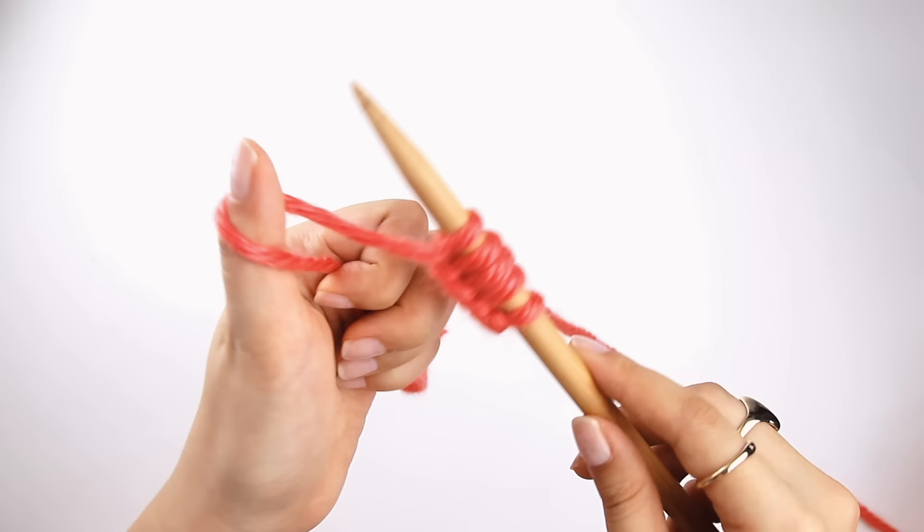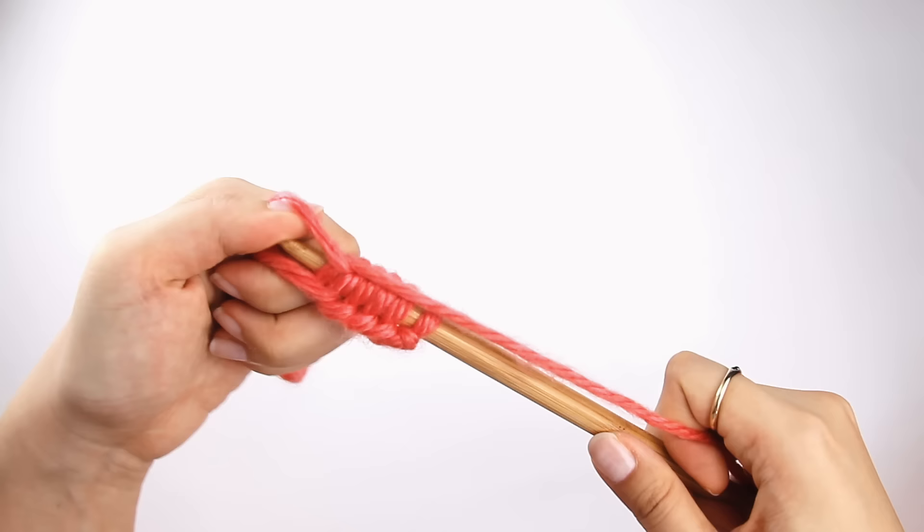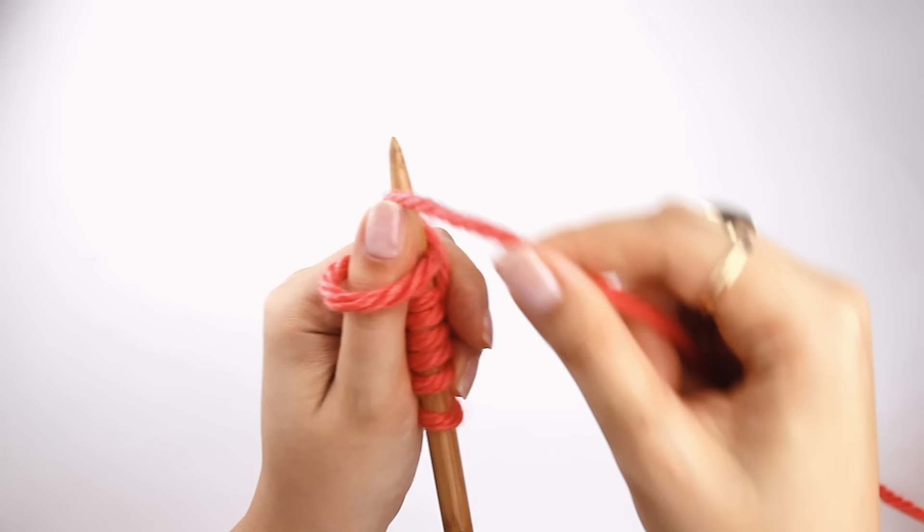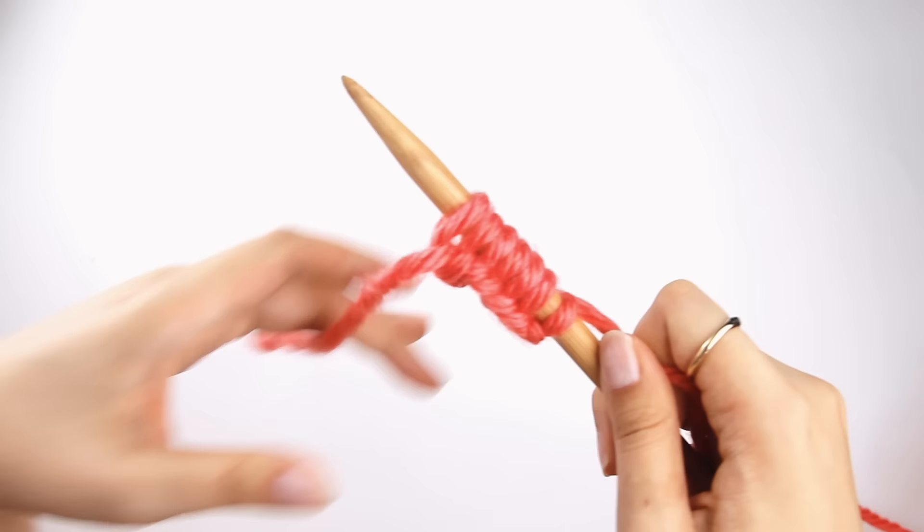So that's all there is to the long tail cast on using the thumb method. If this is confusing you and you're like, oh my gosh, I can't do this, just keep practicing. It's going to take you a couple times to really get it. That's perfectly normal. Just keep at it, and before long you're going to have a really nice cast on that you can start knitting into.